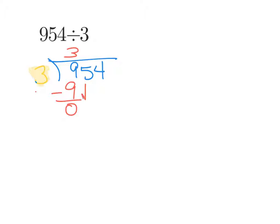Next I bring down the 5 and I repeat the whole process. How many times does 3 go into 5? Well only once. 1 times 3 is 3. And when I subtract I'm left with 2.